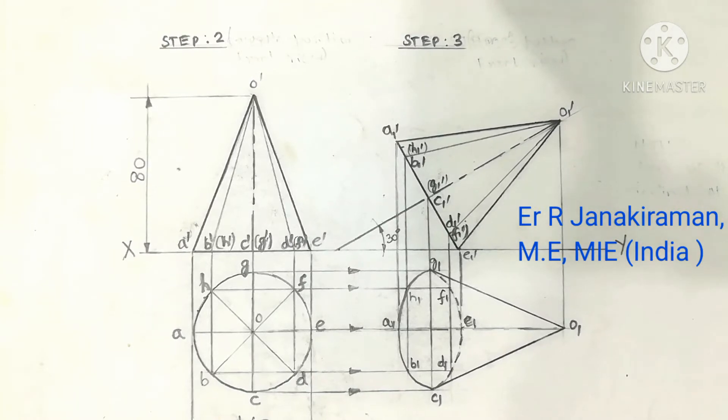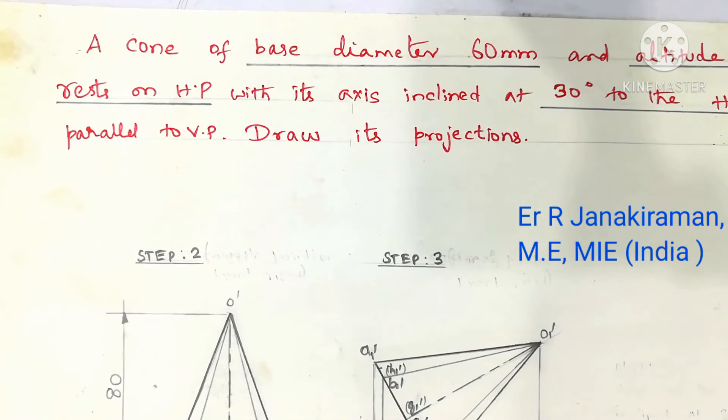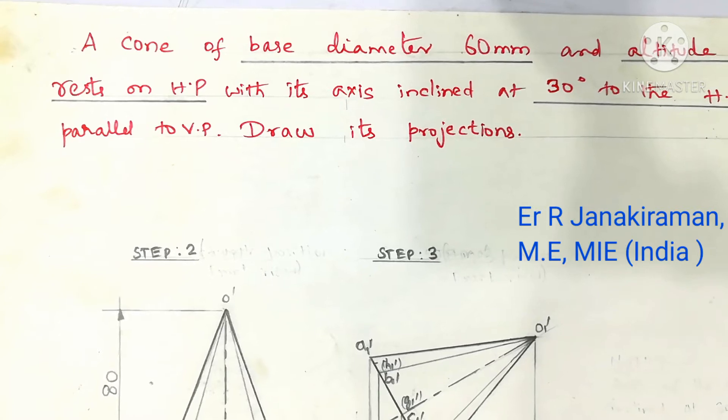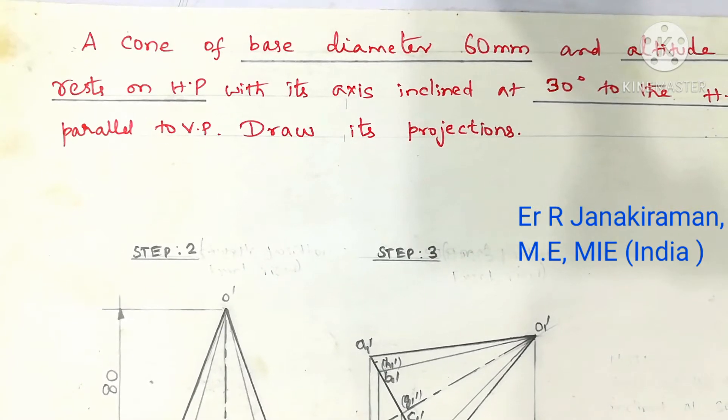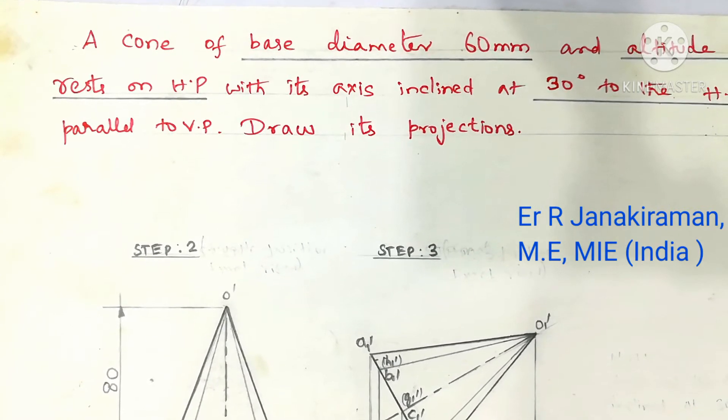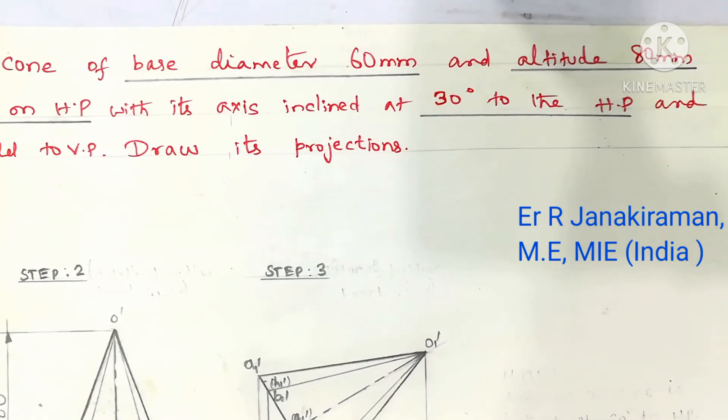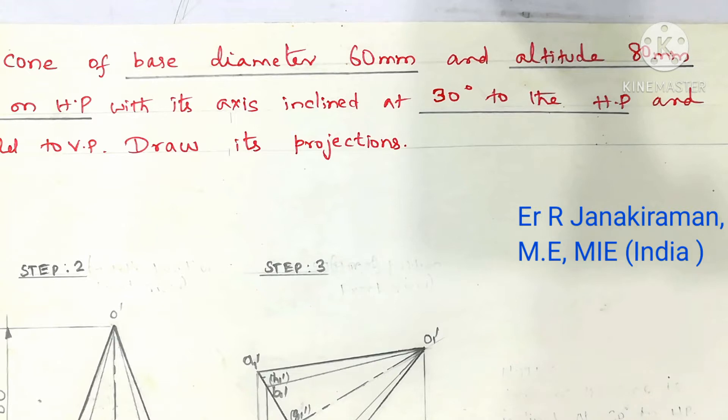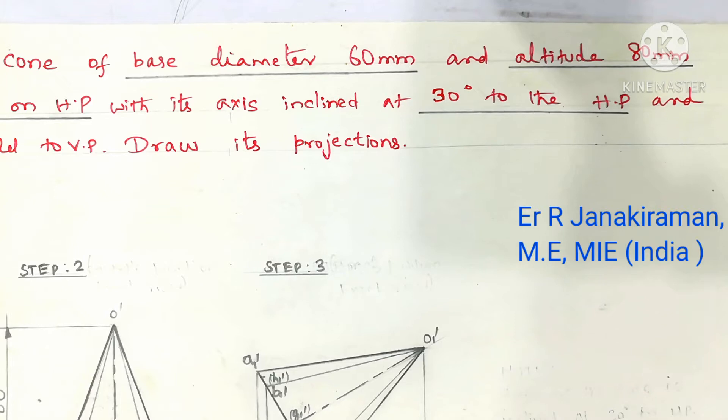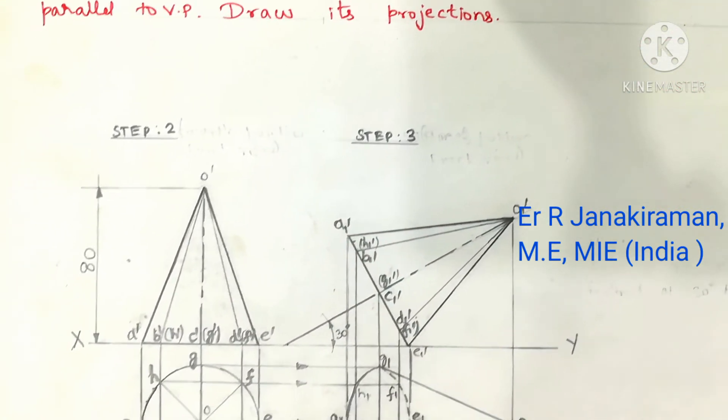So it is a cone of base diameter 60 mm. The scale followed is reduced scale, the size is smaller. 60 mm and altitude is 80 mm. It will be bigger in size. So you can follow whatever size given in the question. That is called reduced scale.